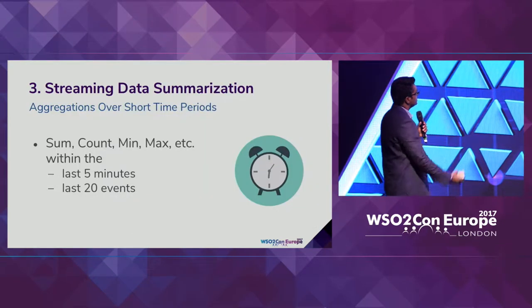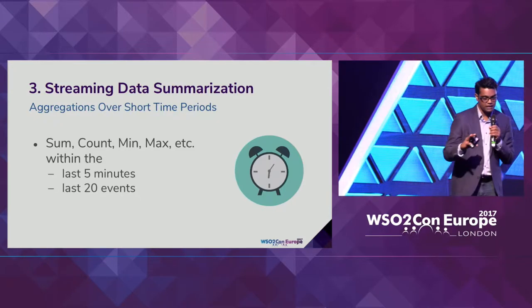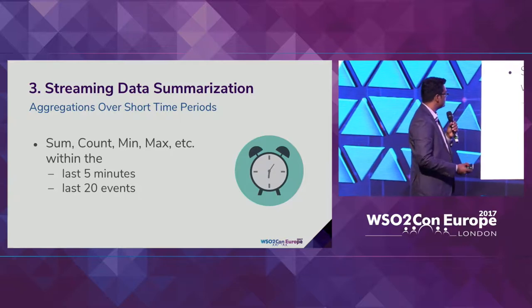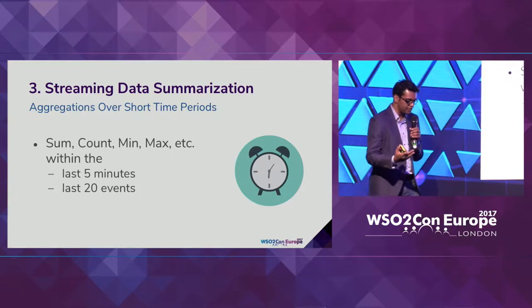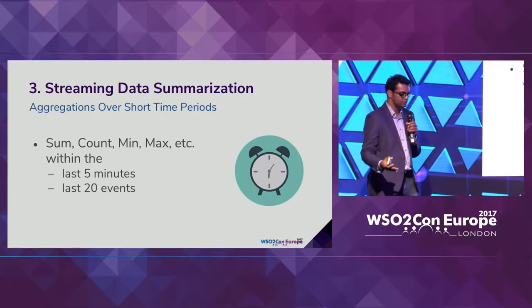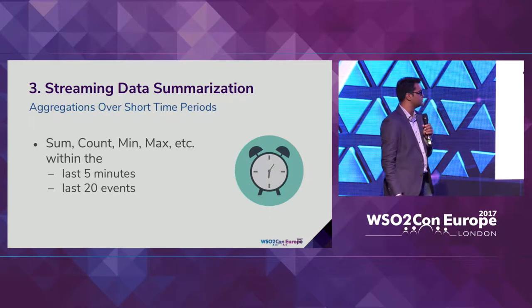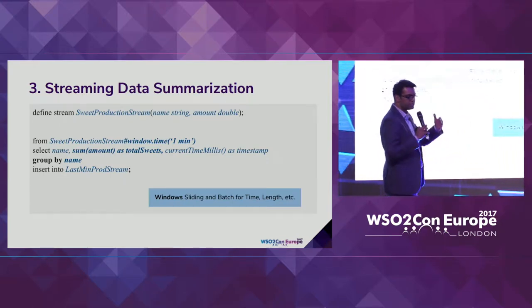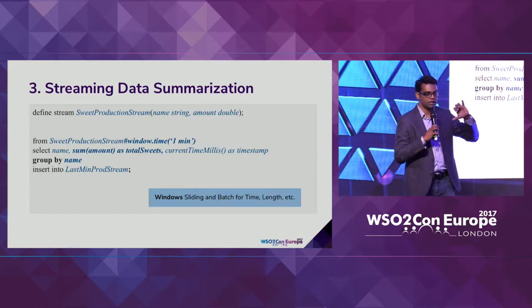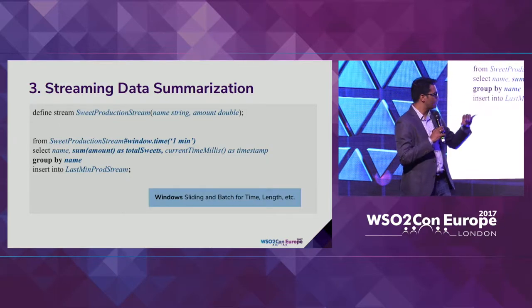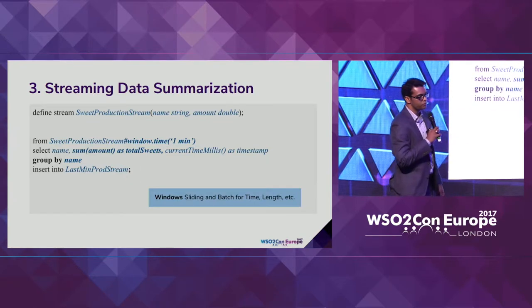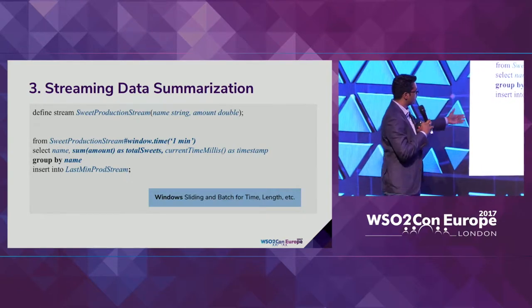Streaming data must be summarized. Summarization is the most commonly used function in data analytics — sum, count, min, max — typically over short periods like last five or twenty minutes. Instead of filtering, we define a window of one minute on the infinite stream, then perform a sum operation grouped by name, producing an event per name to a last-minute production stream. This can also be done for every second, minute, hour, or year, enabling different graph types like hourly or minutely histograms.